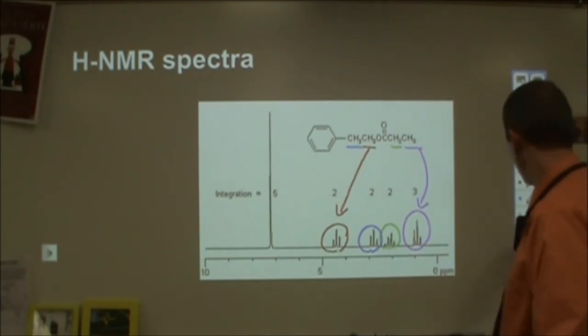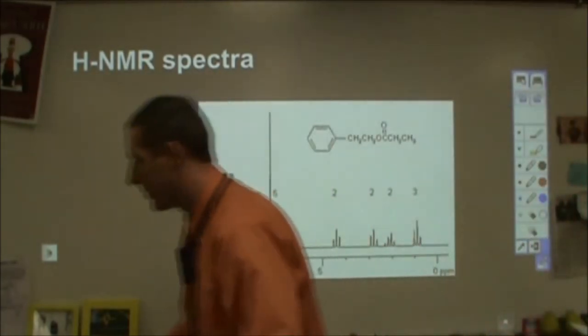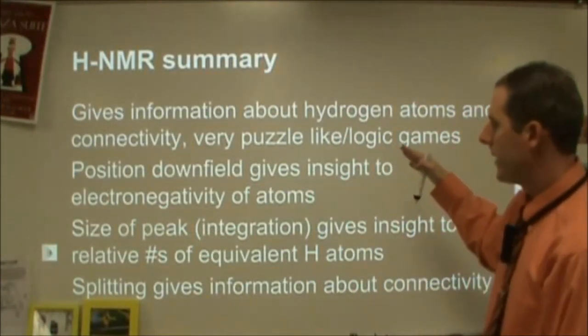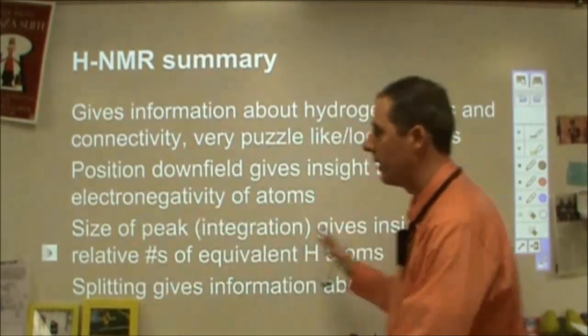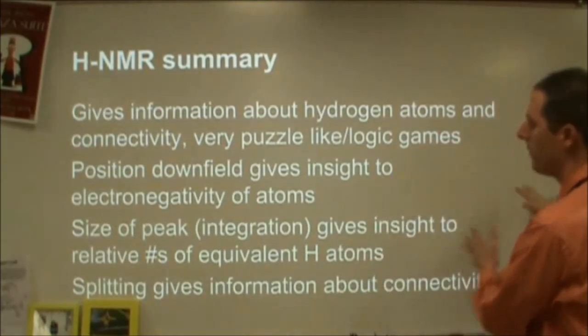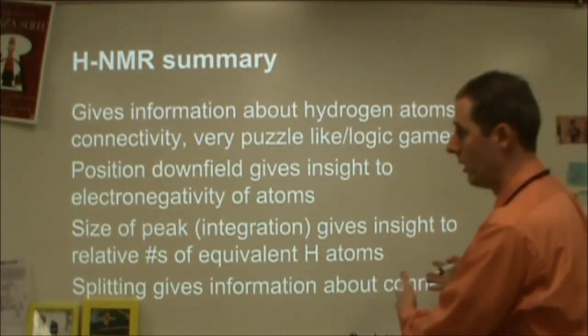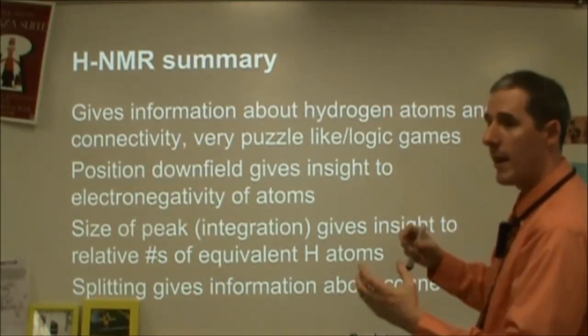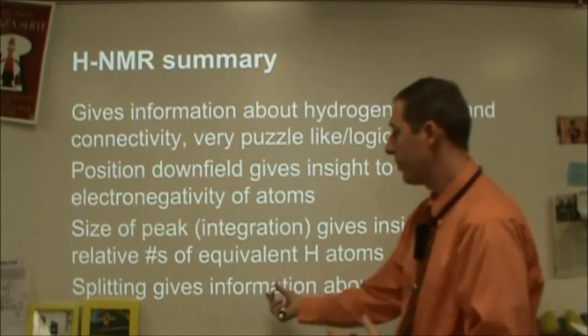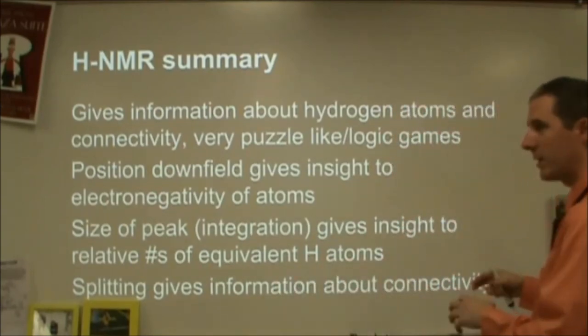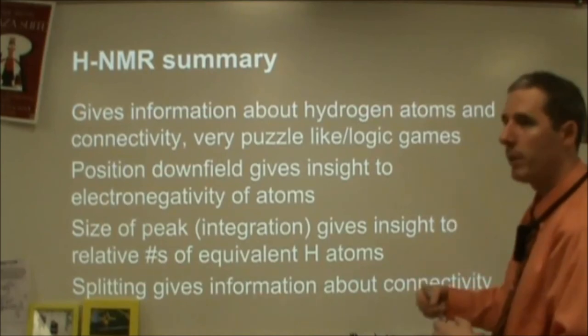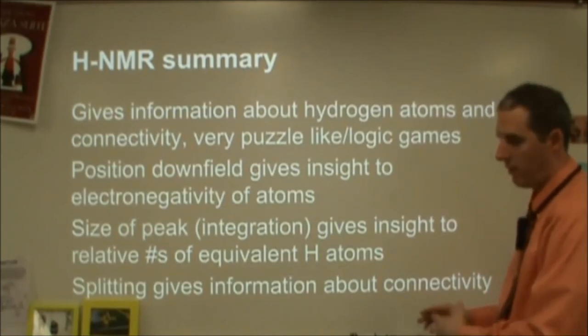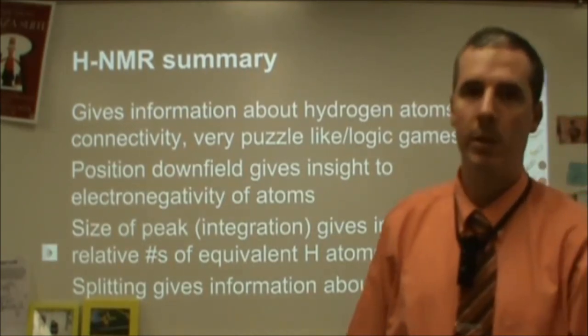So when you're doing NMR, it's kind of like a logic puzzle. You know, what information can you get? Now the summary of that is that the things you can use are where the thing is located downfield. If it's way to the left, you know it's by something electronegative. If it's way to the right, it's just by carbons. The size of the peak, so the integration, the area under that curve gives you information on how many hydrogens of that particular type there are. And then the splitting will give you information about the connectivity of those atoms. So if there's a doublet or a triplet, that tells you how many hydrogens on adjacent atoms, and you can use those three things to then figure out what something is or at least narrow down what something is.